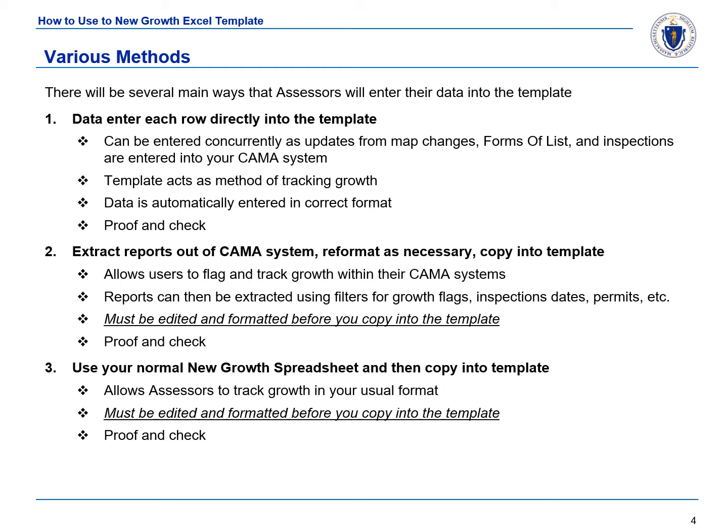Another method would be to extract the necessary growth reports out of your CAMA system, reformat as necessary, and then copy and paste into the New Growth Template. This method allows users to flag and track growth within their CAMA systems. Reports can then be extracted using filters for growth flags, inspection dates, permits, etc. When using this method, your spreadsheet must be edited and formatted before you can copy and paste into the New Growth Template. Be sure to proof and check your entries.